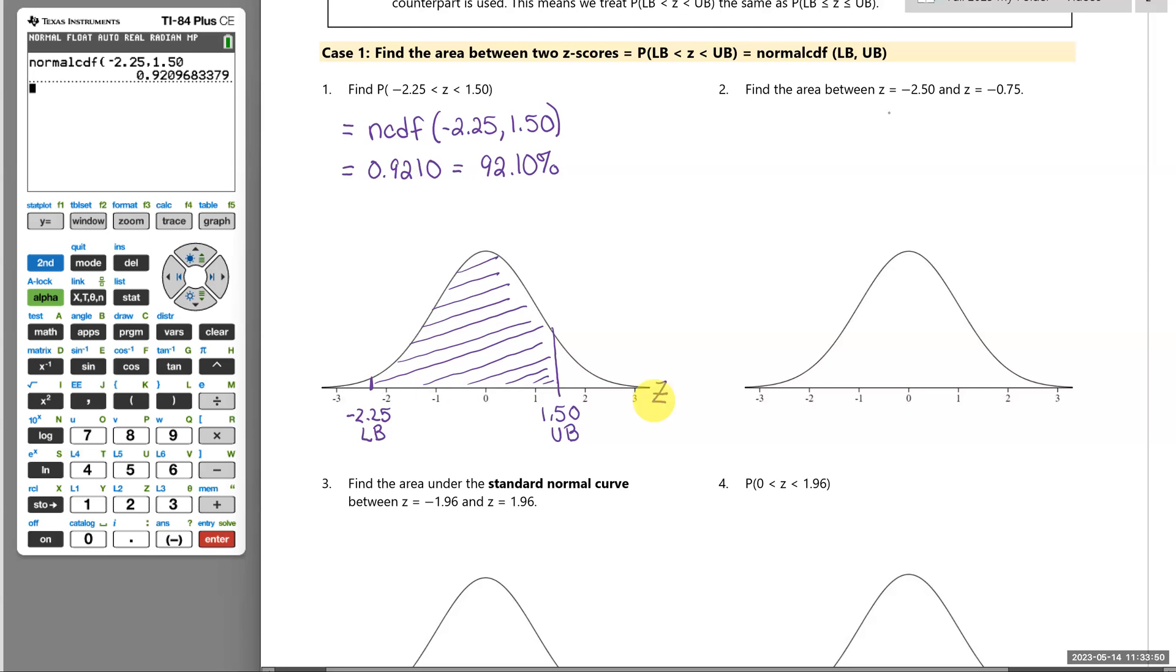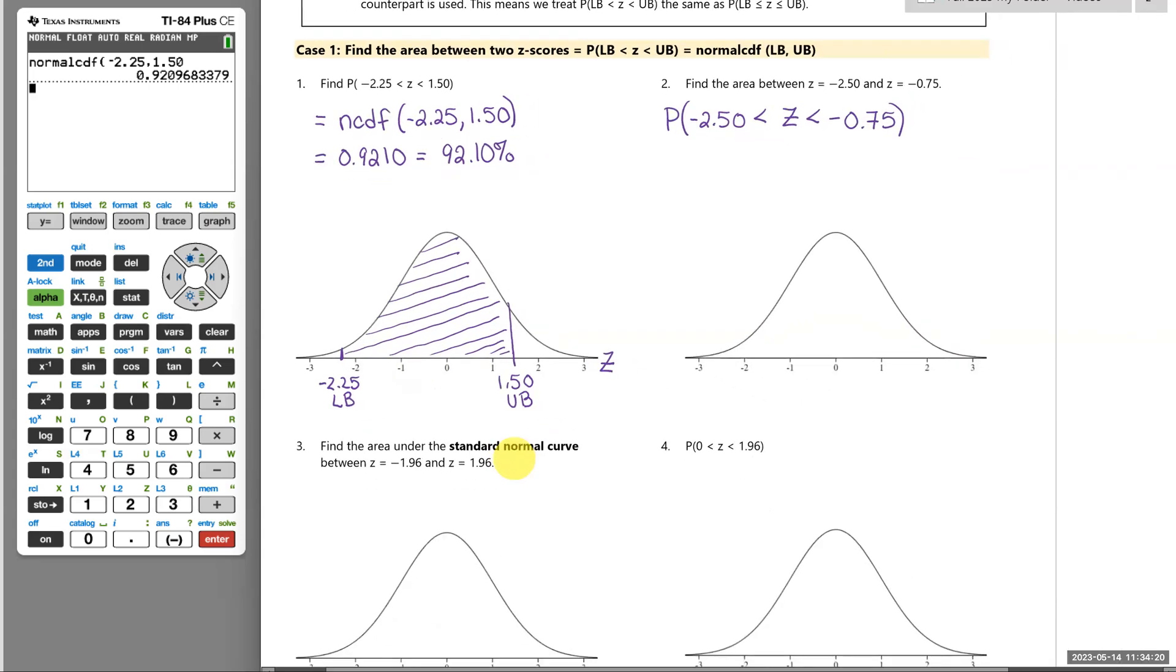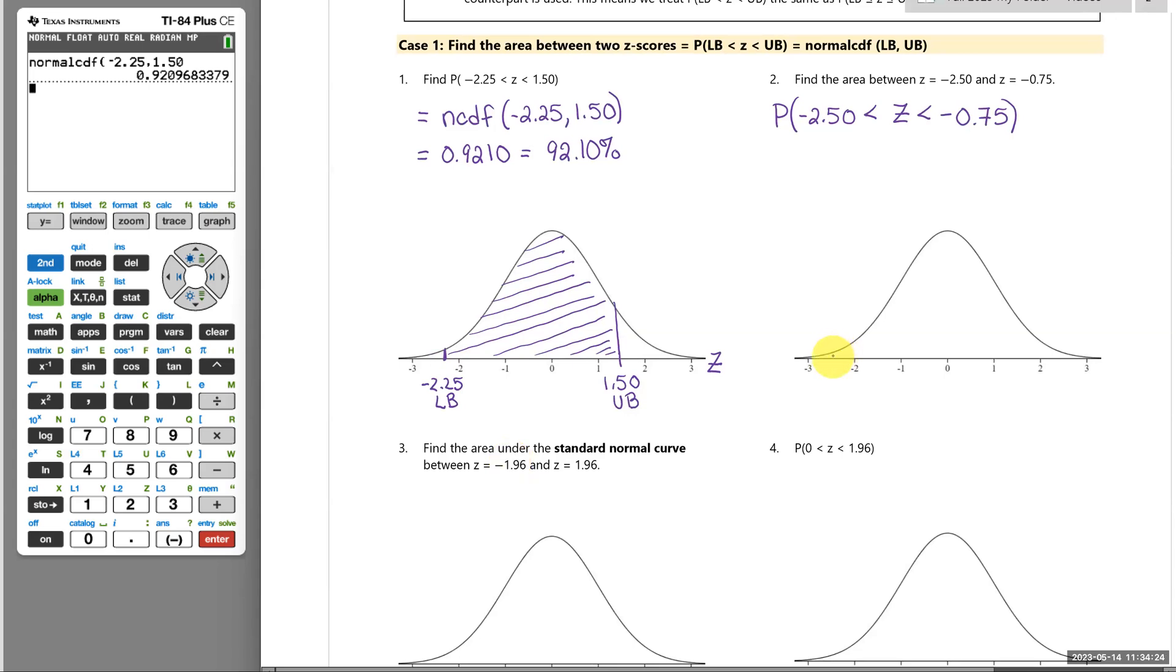Number two: find the area between these two z-scores. Let's practice writing that as a probability. Probability that z is between negative 2.50 and negative 0.75. Let's get a reasonably good picture of that. Negative 2.50 left of zero, and then negative 0.75 also to the left of center. So in this case, we're looking for that area.